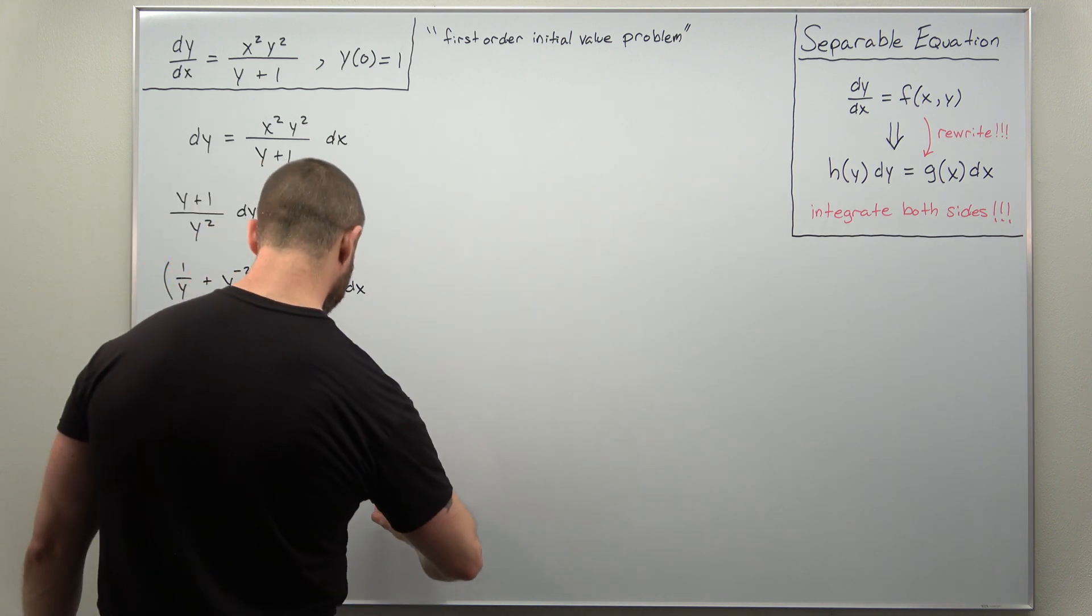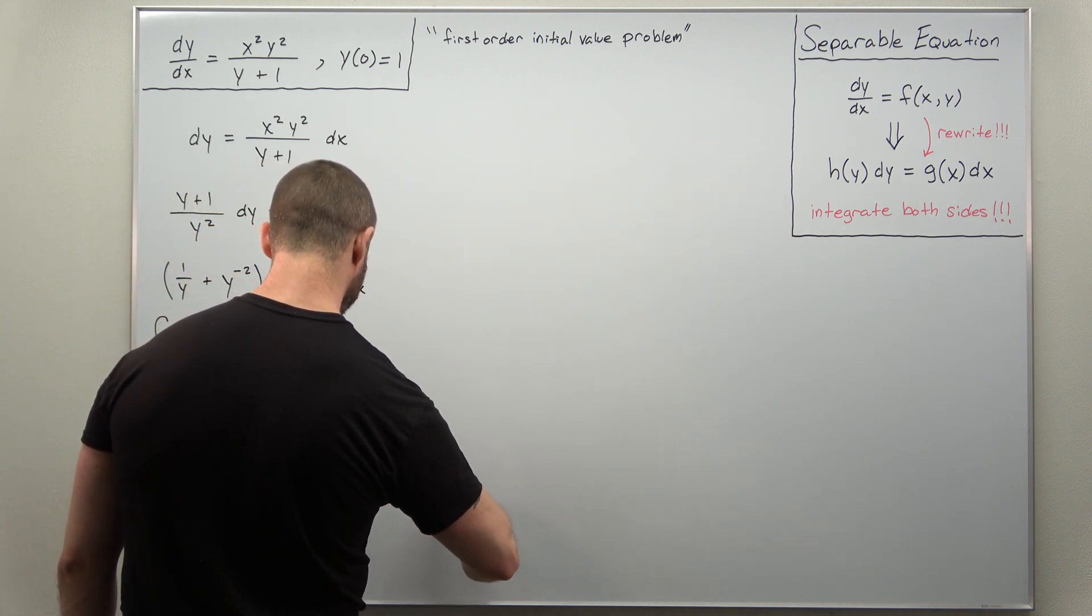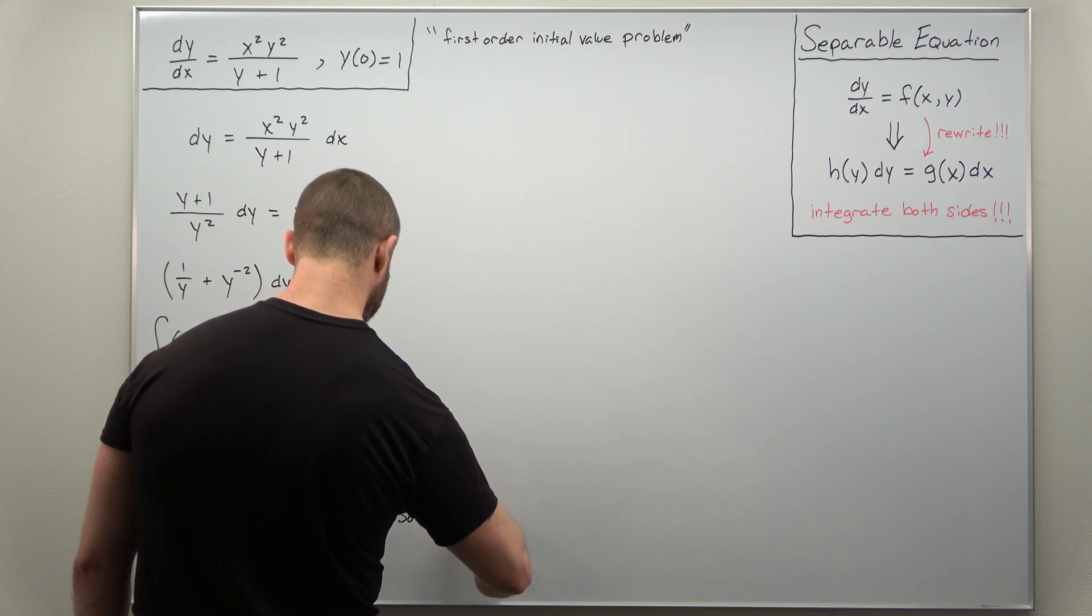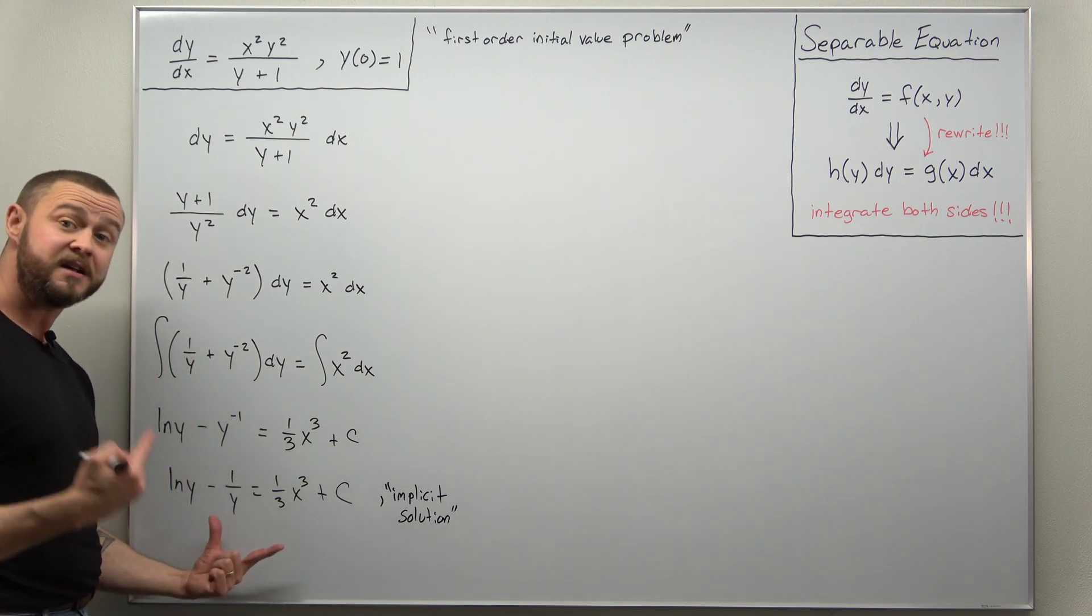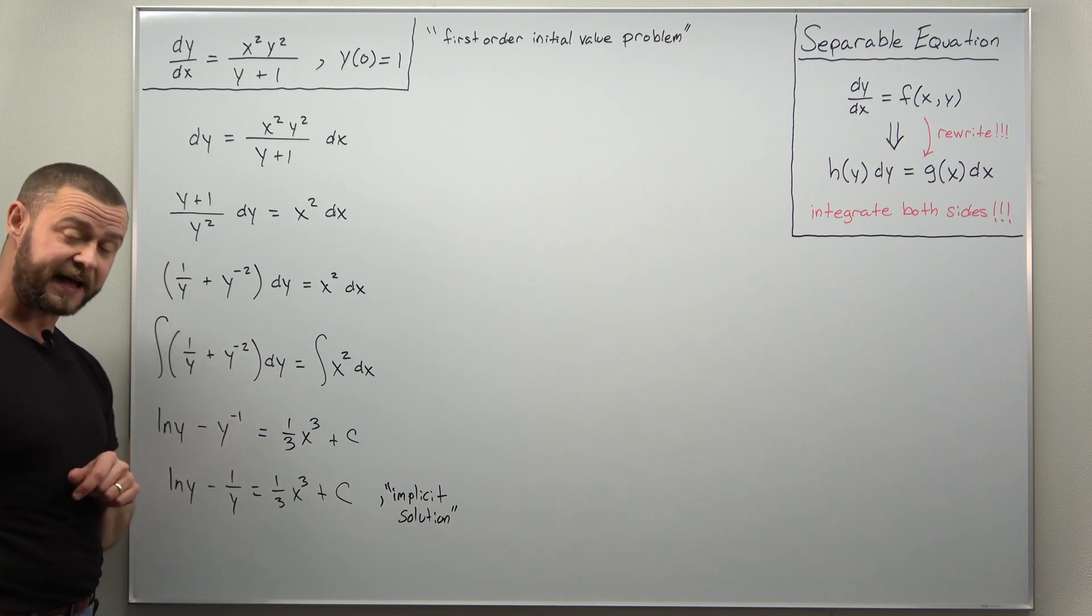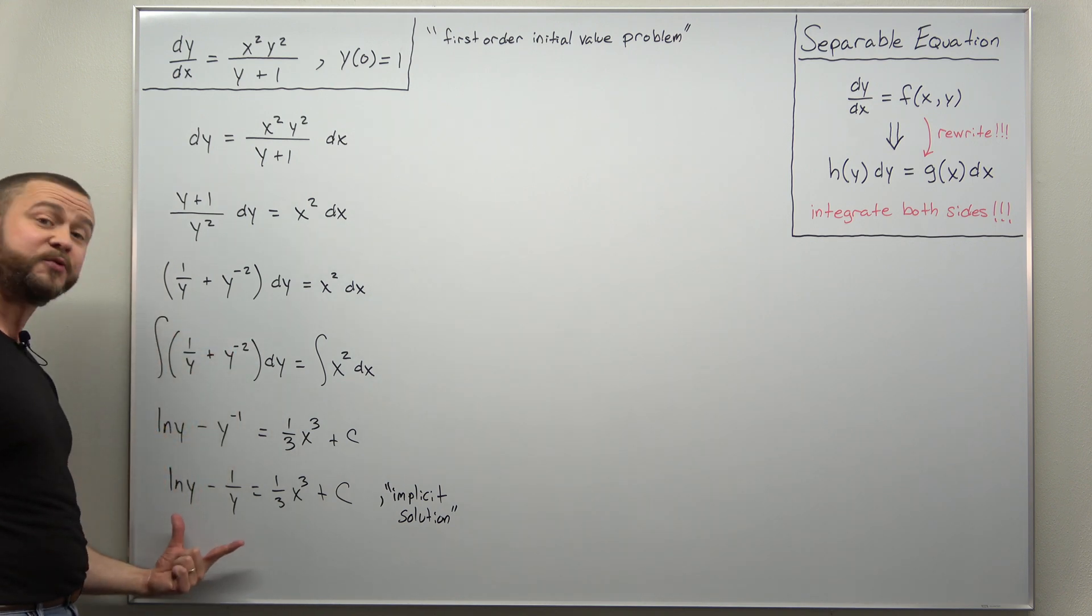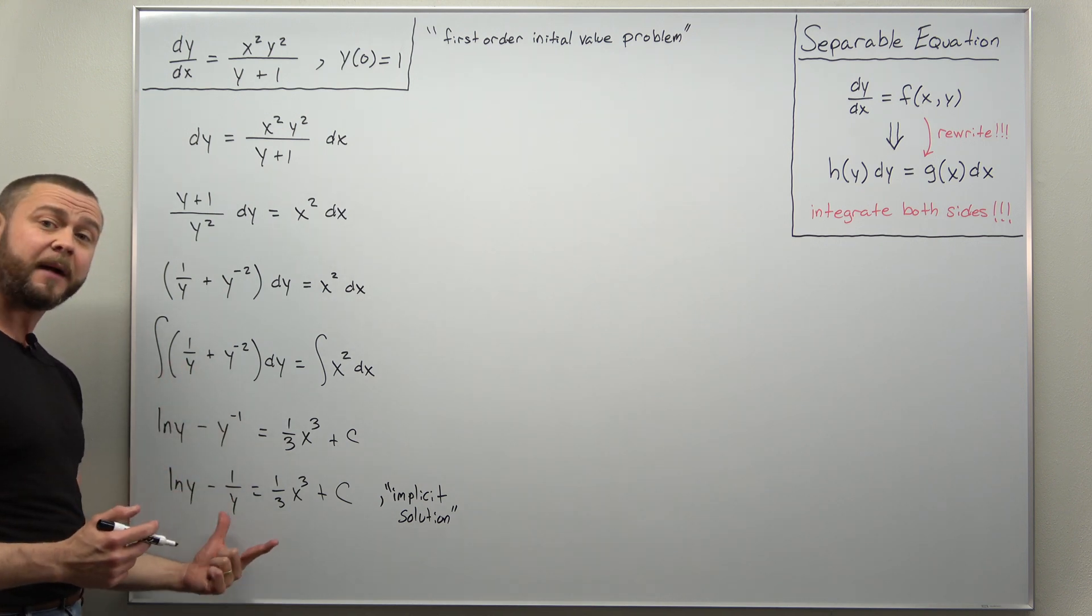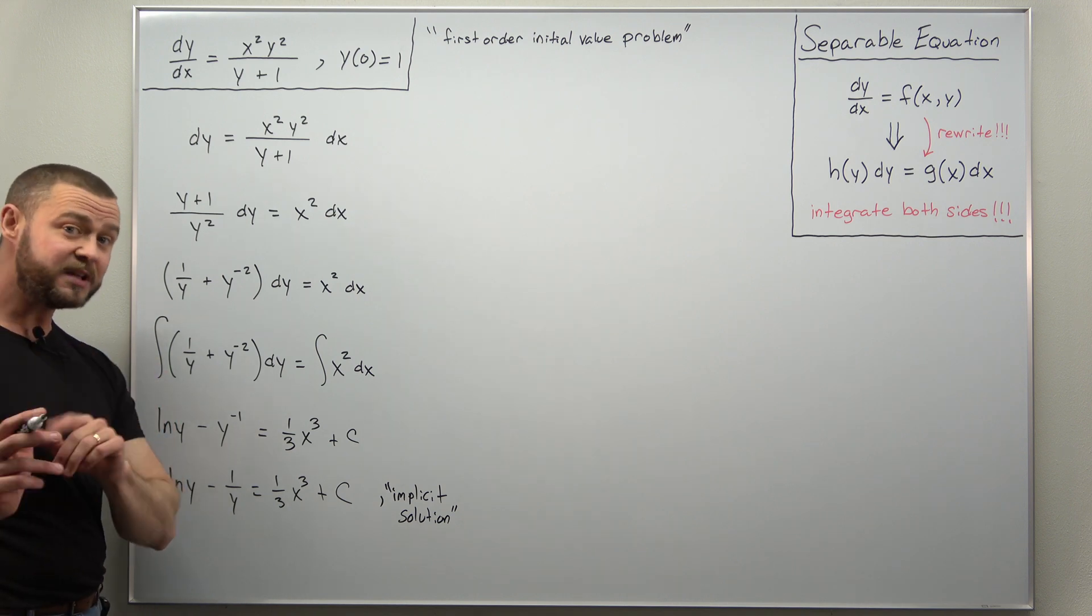Now, this is what's sometimes called an implicit solution, where basically what we call an implicit solution, it's a solution or equation not solved for y in terms of x. Now, some equations you can actually solve for y. This one's going to be rather difficult. So in terms of our solution, that's probably as best of a form as we can put it. So we're basically done.